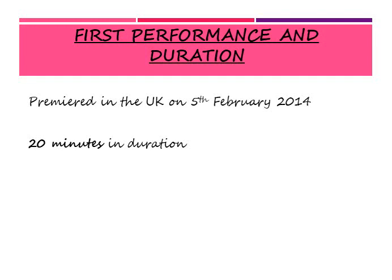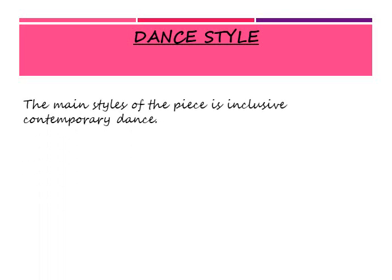Next we are going on to the style of dance that is performed in Artificial Things. You may already have an idea, hopefully you do, but just in case you are still a little bit stuck: the main style of the piece is inclusive contemporary dance. Inclusive means it's able to be performed by anyone. As you can see in this dance, disabled people are primarily the main focus, but the style produced through Artificial Things can be used and performed by anybody.